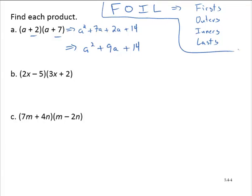So here's another example. Exercise B, we have (2x - 5)(3x + 2). The firsts, 2x times 3x is 6x².